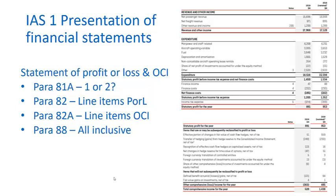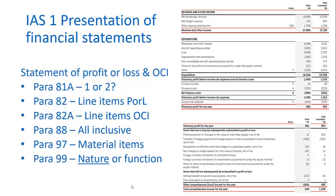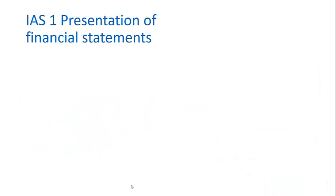There isn't a strong theoretical or conceptual basis for determining what should go in other comprehensive income versus the P&L — that's addressed on an ad hoc basis in individual standards. However, there is essentially an all-inclusive concept of income, and all items of revenue and expenses must at some time go through the income statement. Material items should be disclosed, and expenses should be disclosed on either a nature or function basis, with a preference for nature.